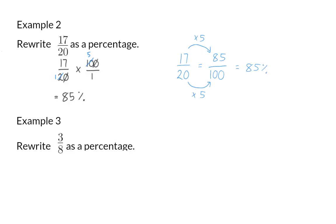Example 3. Rewrite 3 over 8 as a percentage. So if I want to take 3 over 8 and multiply that by 100 over 1 to get the percentage, I can simplify the denominator as well as numerator by dividing by 4. And when I now multiply the numerator, I have 75, and in the denominator, 2. This can be rewritten as a mixed number of 37 and a half percent, or even as a decimal of 37.5%.